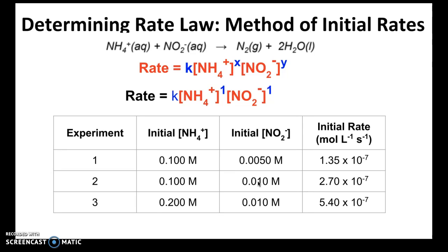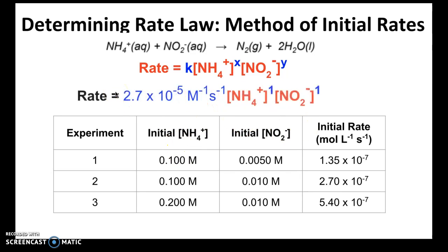The rate order for NO₂⁻ is also one. You may notice the rate orders match the coefficients, but that's a coincidence — remember, these values are not the coefficients. Once you have the rate orders, choose any experiment, plug in the concentrations and the rate, and solve for k. In this case, k equals 2.7 × 10⁻⁵, and it's important to note the units — units are critical here.